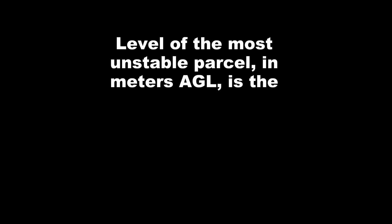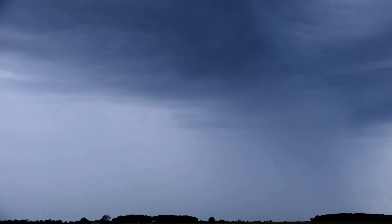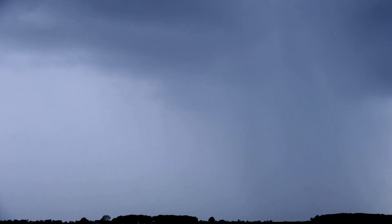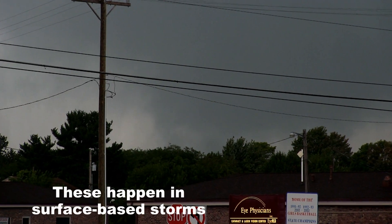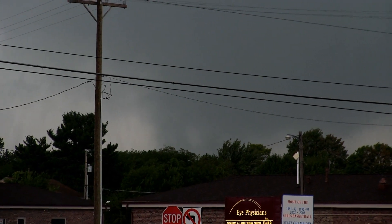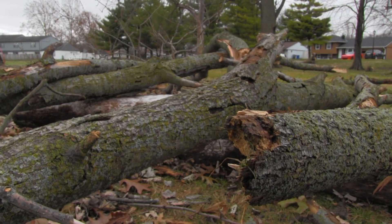The level at which this most unstable parcel is located is referred to as the lifted parcel level, or LPL. With elevated thunderstorms, we can have convection located at the top of a frontal boundary or an inversion layer. And while this displacement from the surface makes tornadoes unlikely — since they require surface-based rotation to develop — these storms are far from harmless. They can produce intense lightning, large hail, heavy rain, and sometimes even wind damage.